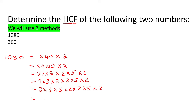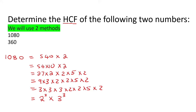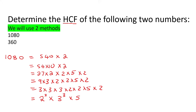So 1080 can be written as 2 to the power of 3, times 3 to the power of 3, times 5. This still gives you 1080, but we're just writing it in a simplified way.